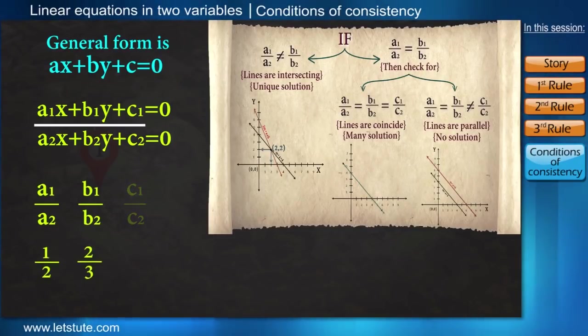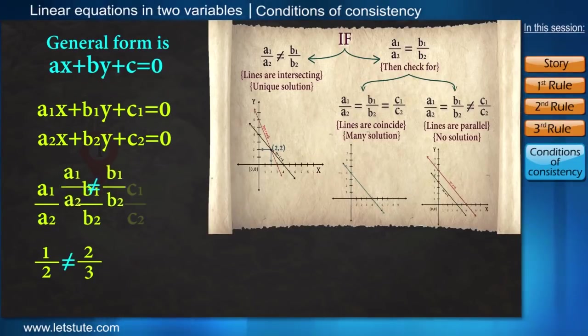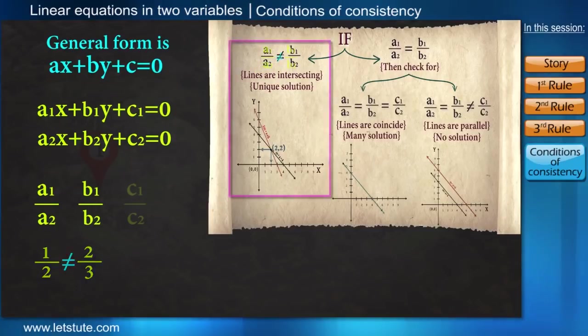So if the first two ratios, that is a1 by a2 and b1 by b2 are not equal, that means the lines are intersecting and it will have only one solution, that is unique solution.